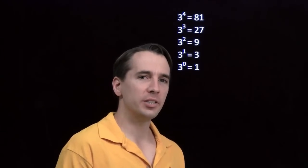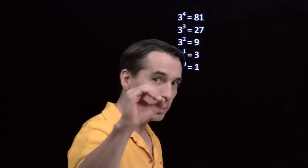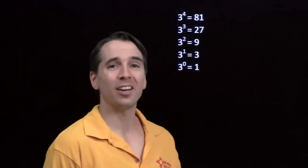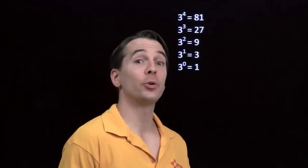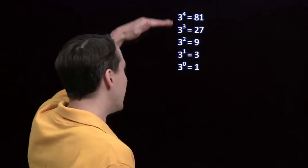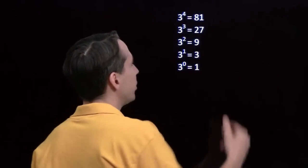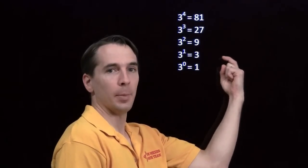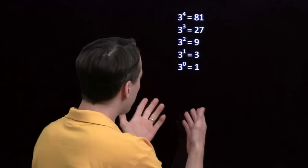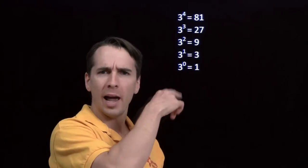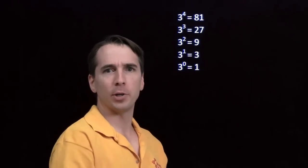Back when we were looking at raising numbers to the exponent 0, I made this stack of powers of 3. We noticed that as we go down this stack, over here on the right side, we're dividing by 3 at each step. After I finished that problem, I looked back at this and thought: what happens if we keep going?